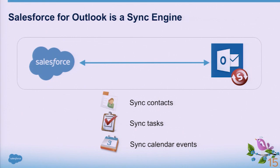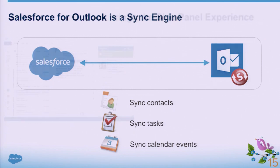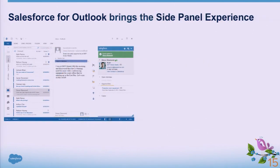Synchronization means that whether you're looking at your calendar in Outlook or in the Salesforce app, your calendar looks the same, so that your co-workers can book appointments when you are available — whether they do that in Outlook or in Salesforce. The second component that Salesforce for Outlook brings is the side panel experience directly in the Outlook application.